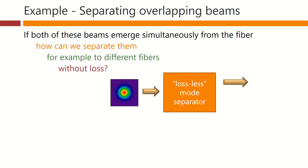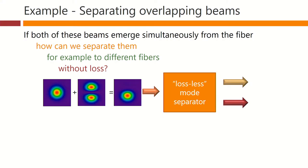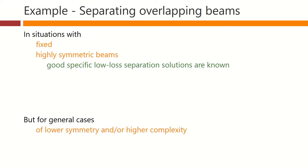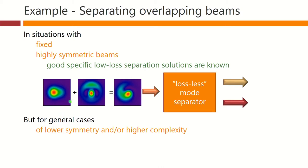Here we have our single bump beam coming into our hypothetical device, and it comes out the top as some kind of beam. And then here is our two-bumped beam coming in, and it is to come out as some kind of beam, but now out of the bottom — so it's clearly separated from the other one. And if we come in with a linear superposition of these, we want them to come out separately. The components should be separate. These beams are indeed orthogonal, by the way.